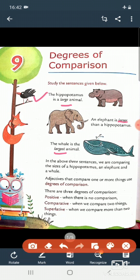So, when two people or two things are compared with each other, the degree of adjective that is used is called the comparative degree. And children, when three or more people, places or things are compared, the degree of the adjective...